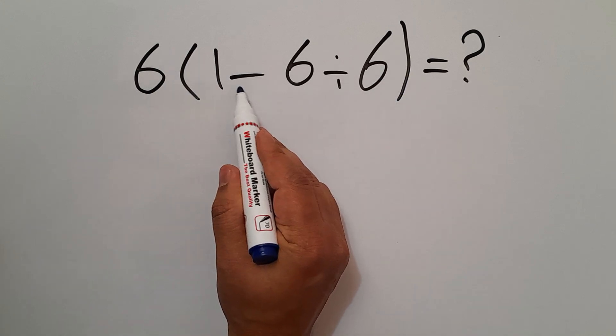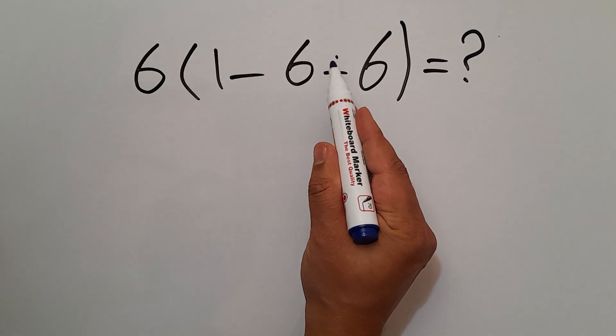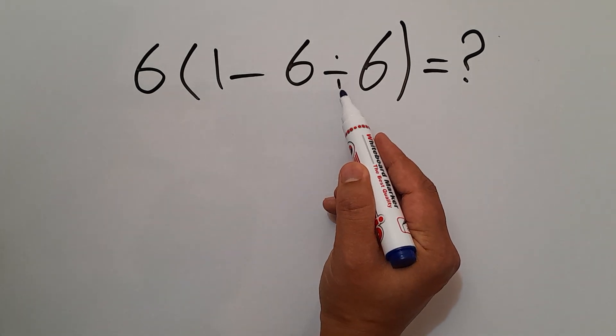this parentheses we have one subtraction and one division. According to the order of operations, division has higher priority than subtraction.